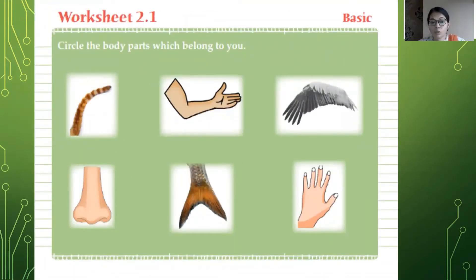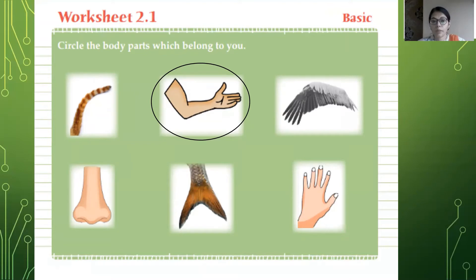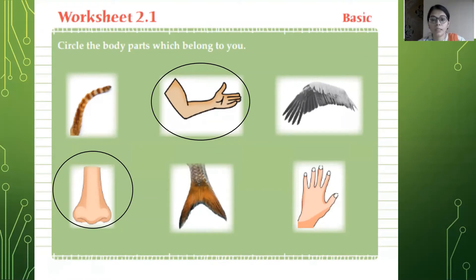The first picture is a tail, so you are not going to circle that. The second picture is a hand — yes, you are going to circle it. The third picture is the body part of a bird, so you are not going to circle it. The next one is a nose, so you are going to circle it — it belongs to us, we have a nose. Then you can see the body part of a fish, so you will not circle that. The last one is a picture of fingers, so you are going to circle it — that body part belongs to us. This way you solve worksheet 2.1.